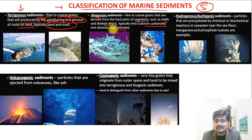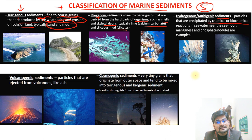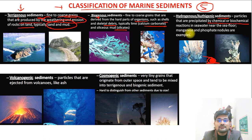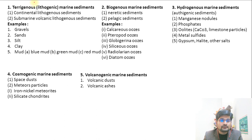Third is hydrogenous sediments, also called authigenic sediments — particles precipitated by chemical or biochemical reactions in seawater on the seafloor itself, coming from a localized source, with many manganese and phosphate nodules. Fourth is volcanogenic sediments — material coming from volcanoes inside the ocean. Fifth is cosmogenic sediments — material coming from outer space in the form of meteorites.